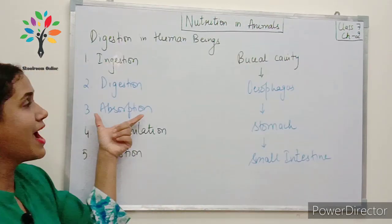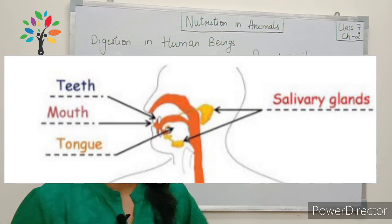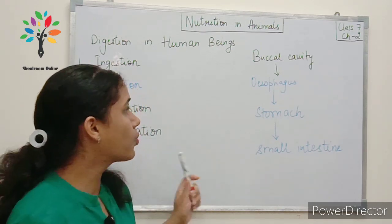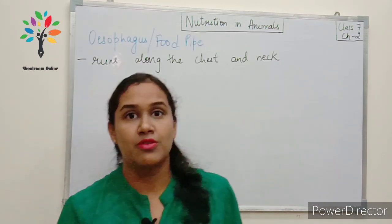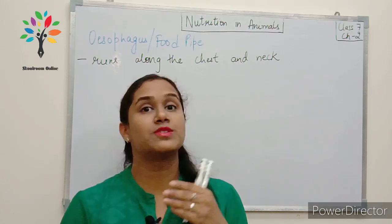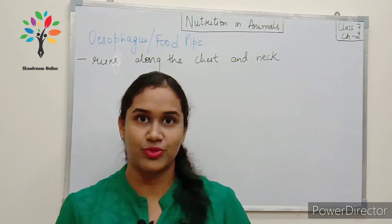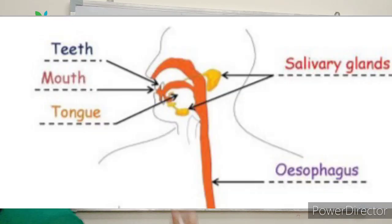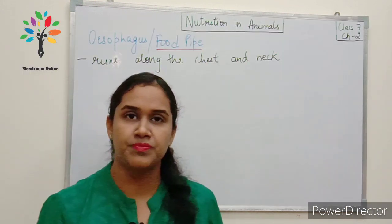In the last video we covered the buccal cavity with teeth, tongue, and salivary glands. Today we are going to discuss the esophagus, stomach, and small intestine. The food was mixed with saliva and the tongue helped in swallowing. This swallowed food then enters the esophagus, or the food pipe, which runs along the chest and neck of the human body.